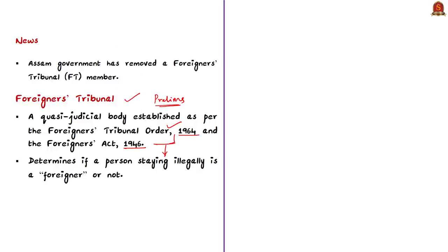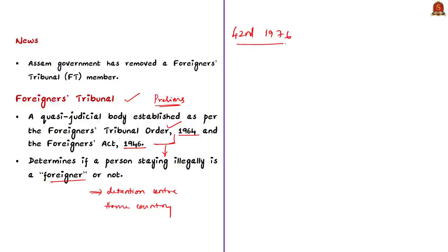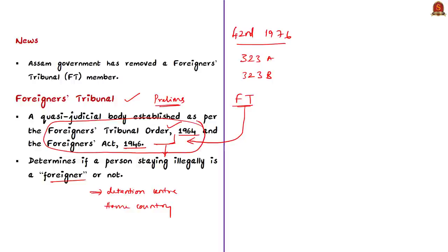If a person is declared a foreigner staying illegally, they will either be kept in detention centers or deported to their home country. It is relevant to know about the 42nd Constitutional Amendment Act of 1976, which empowered the central and state governments to set up tribunals as per inserted Articles 323A or 323B of the Indian Constitution. However, Foreigners Tribunals are constituted based on the Foreigners Act of 1946 and the Foreigners Tribunal Order of 1964 — not under Articles 323A or 323B.